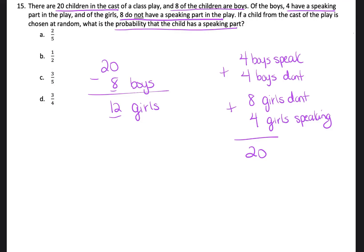But now, I have to go back to my question and ask what they're asking me for — it's the probability that the child has a speaking part. When it comes to probability, they're asking me to put it in a fraction. So the numerator is what they're looking for, which is the child who has a speaking part.